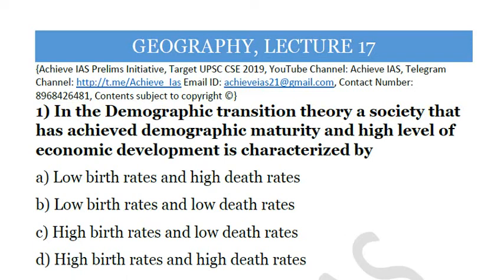The answer is B — low birth rates and low death rates. When demographic transition takes place, the level of demographic maturity is said to be achieved when there is a low birth rate as well as a low death rate.